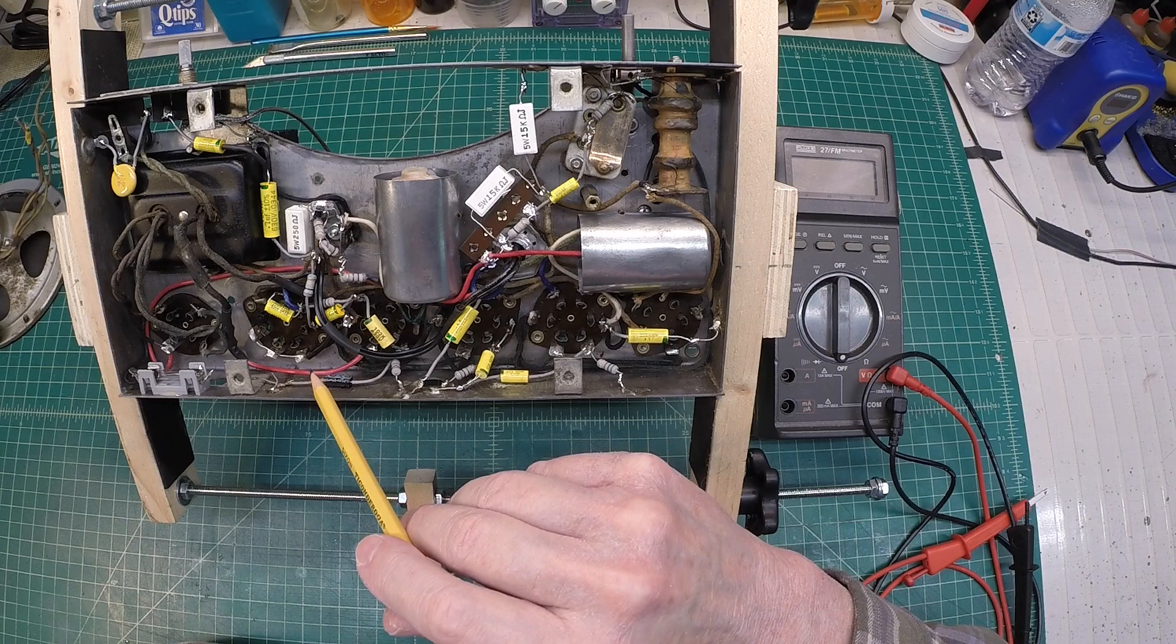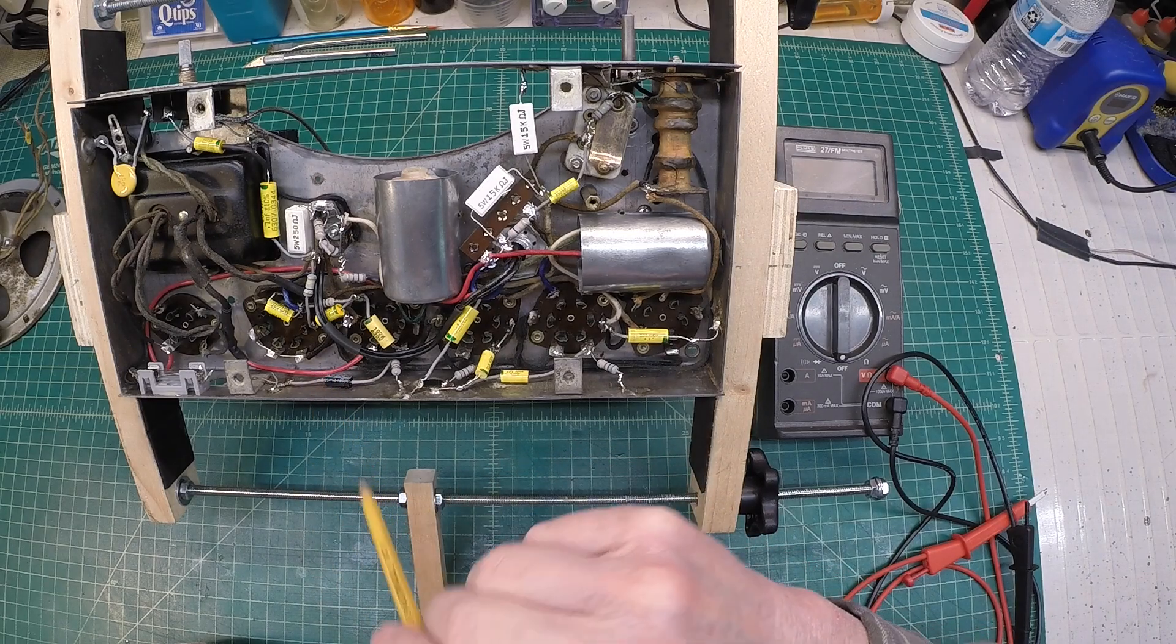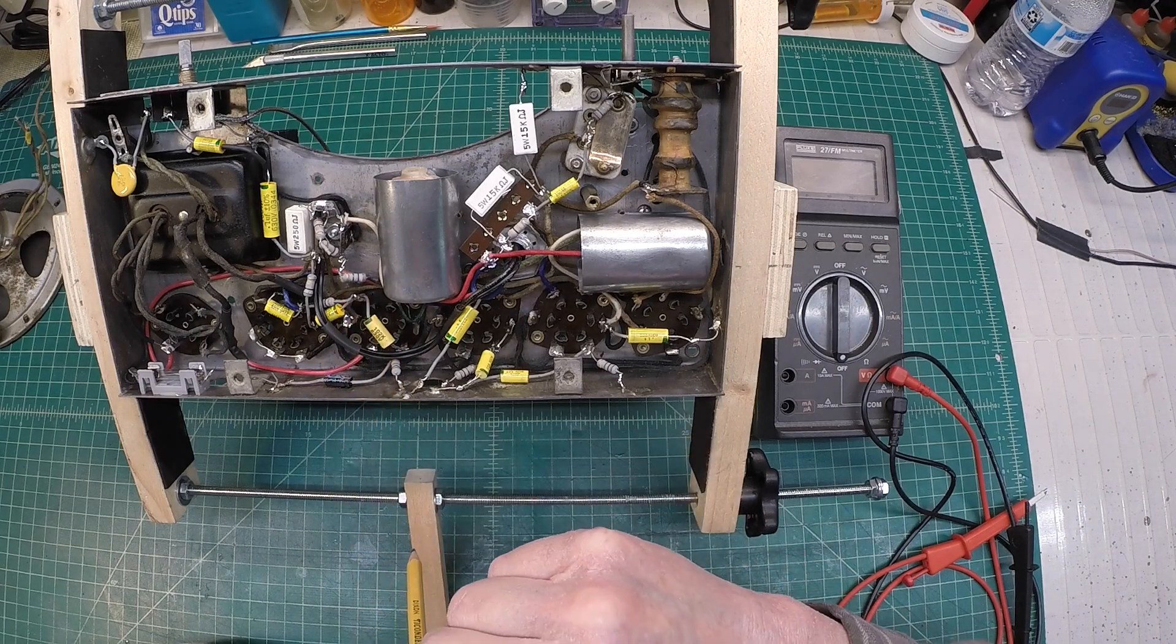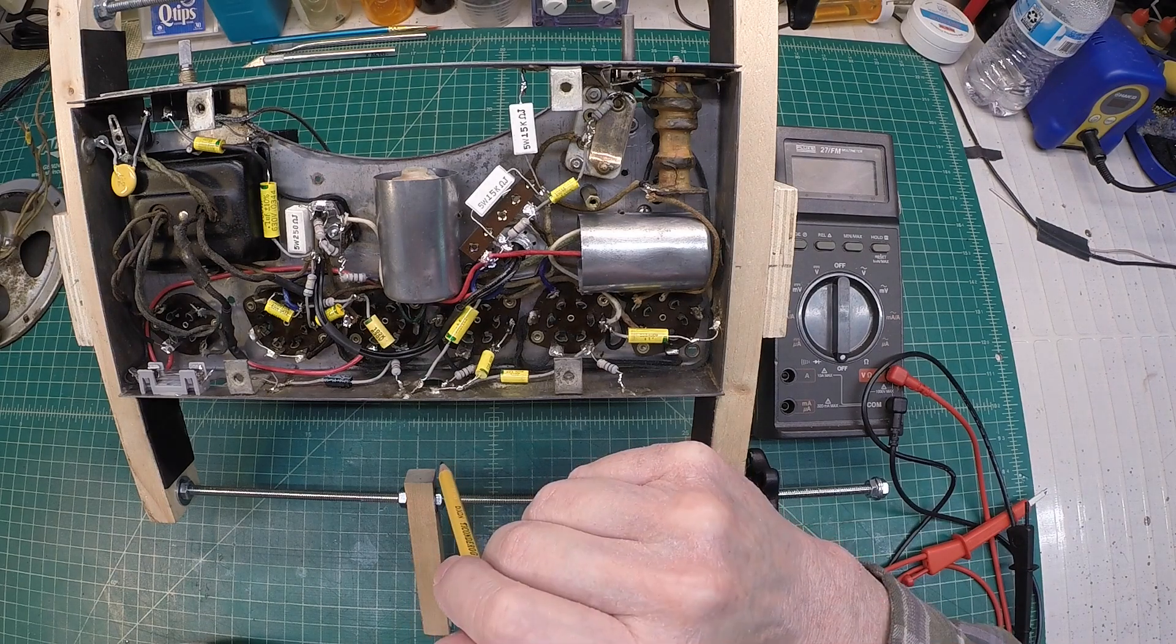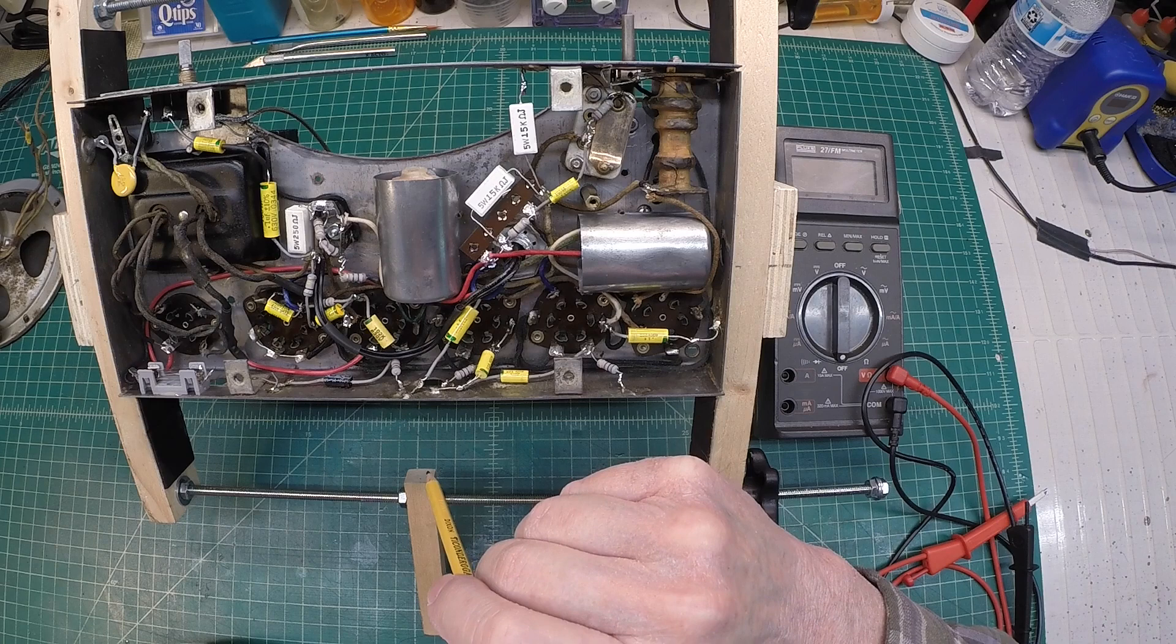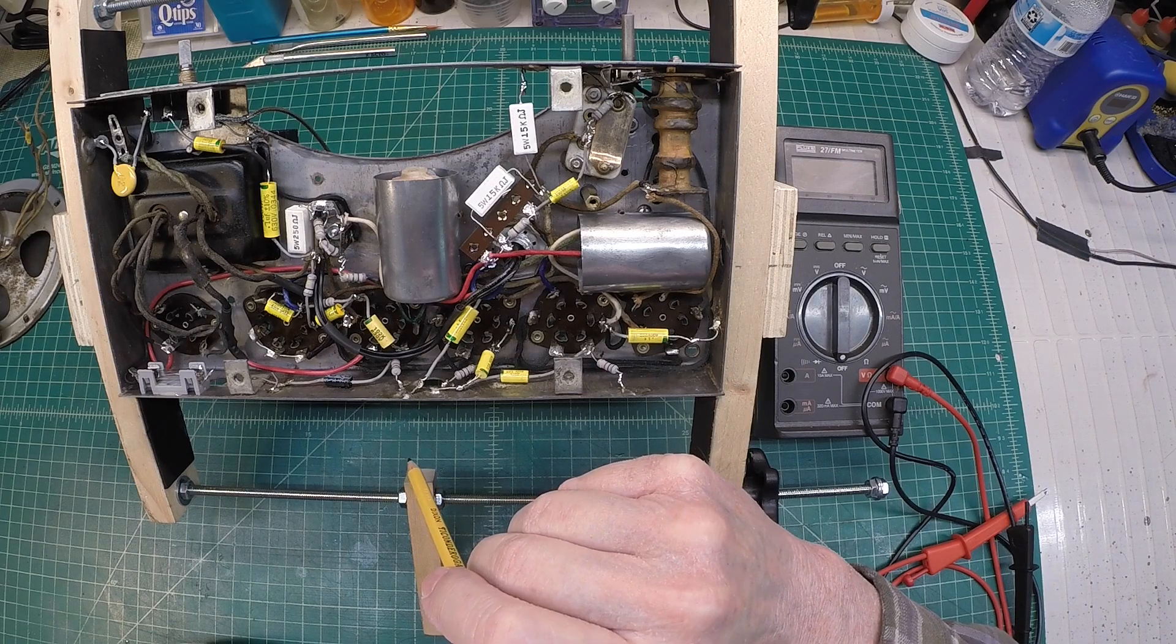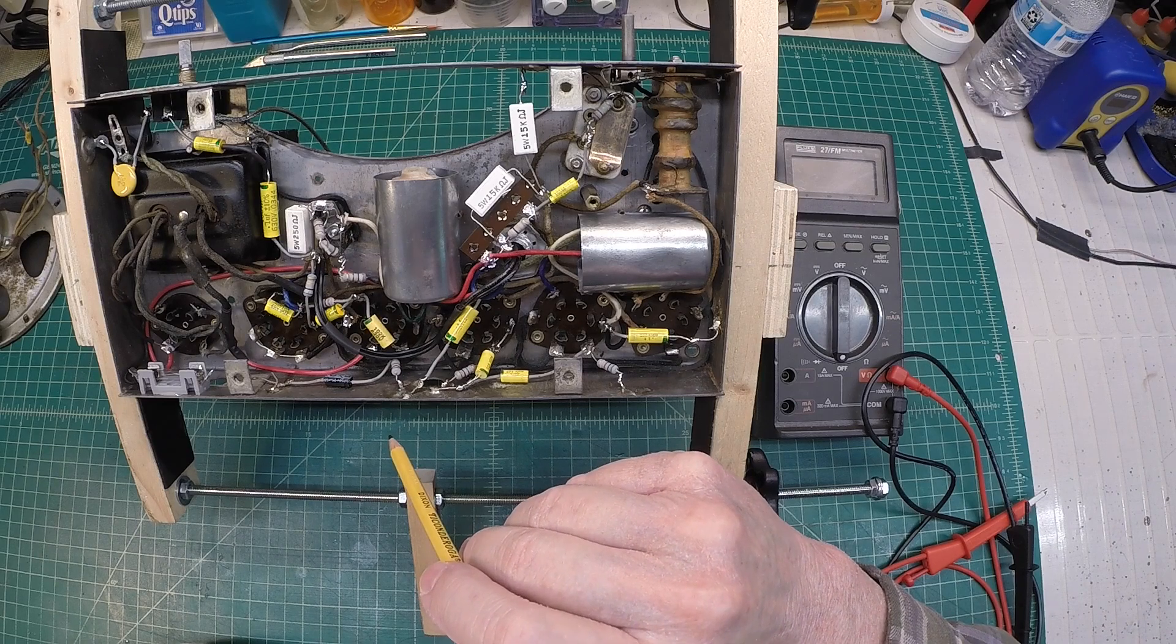So let's do some DC resistance measurements and just make certain that looking at the schematic we've got this thing put back together the way it should be. So I'm just hoping to be within 10% of the original values. Most of these were anywhere from 50 to 200% high.